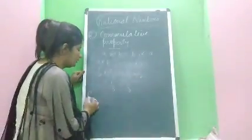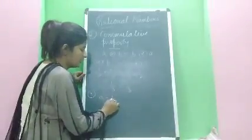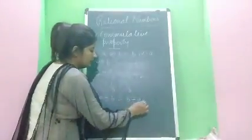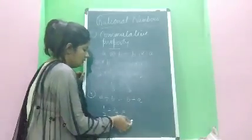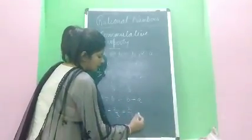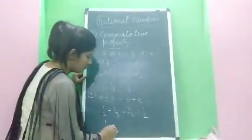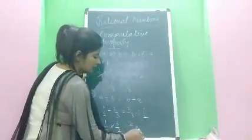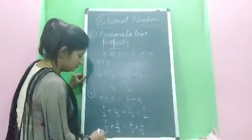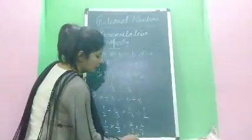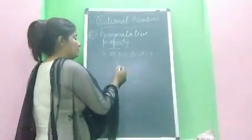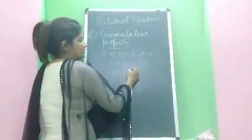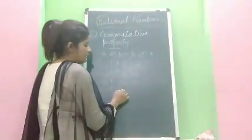For division: does A ÷ B equal B ÷ A? Taking 1/2 ÷ 2/3 = 3/4, but 2/3 ÷ 1/2 = 4/3. These are not equal, so commutative property does not hold for division. Therefore, commutative property holds only for addition and multiplication, not for subtraction and division.